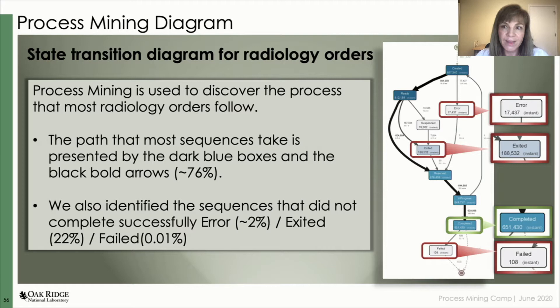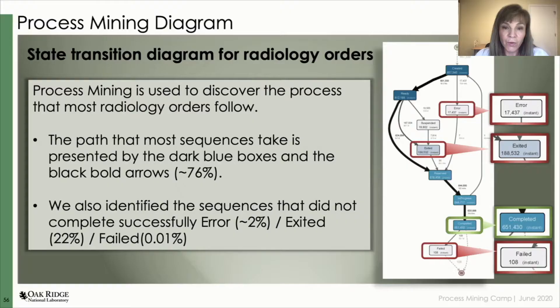We found that most cases complete successfully — about 76%. The percentage of orders that go into the error state is about 2%, and the percentage of orders that go into the exceeded termination state is about 22%, while the failed case has 0.01%.